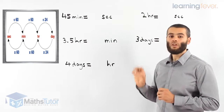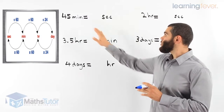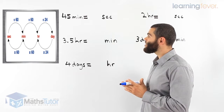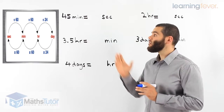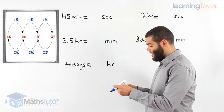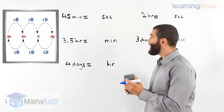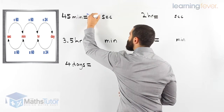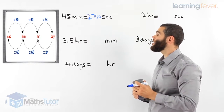Let us look through the examples. We have 45 minutes, and we want to know how many seconds that is. We're going from minutes back to seconds — the process says we have to multiply by 60. So we grab our calculator: 45 minutes times by 60. Our answer is 2,700 seconds. There are 2,700 seconds in 45 minutes.